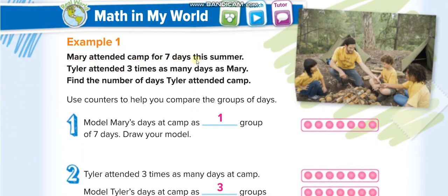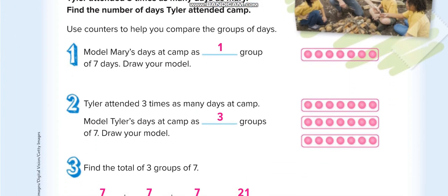Look at this first example: Mary attended camp for seven days this summer. Taylor attended three times as many days as Mary. So three times of Mary is three times seven, which equals 21. You will draw three lines for Taylor with seven dots each, and just one line for Mary.